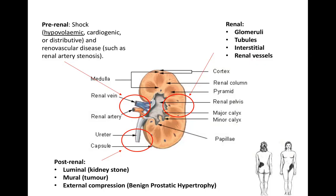Causes of AKI are divided into pre-renal, renal, and post-renal. Pre-renal causes include hypovolemia and renal vascular disease such as renal artery stenosis. This can occur when patients are started on an ACE inhibitor with underlying renal artery stenosis, which can cause flash pulmonary edema — an exam question that comes up from time to time.